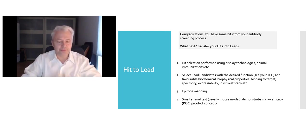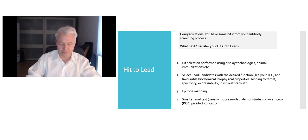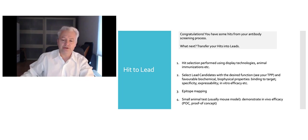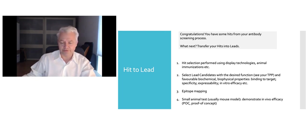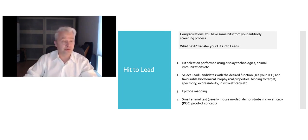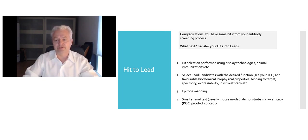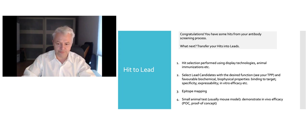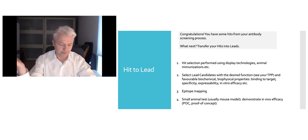Let's start with the first phase: hit to lead. Congratulations, you have some hits from your screening process. The first step is hit to lead — make out of your hits some leads. You generated some hits, for example using phage display or other display technologies, by immunizing animals or other methods. You now have a handful of antibodies that bind to your target molecule X and you want to look at them more closely. The first thing you do is select lead candidates with the desired function. Here you have to rely on your TPP — your target product profile.